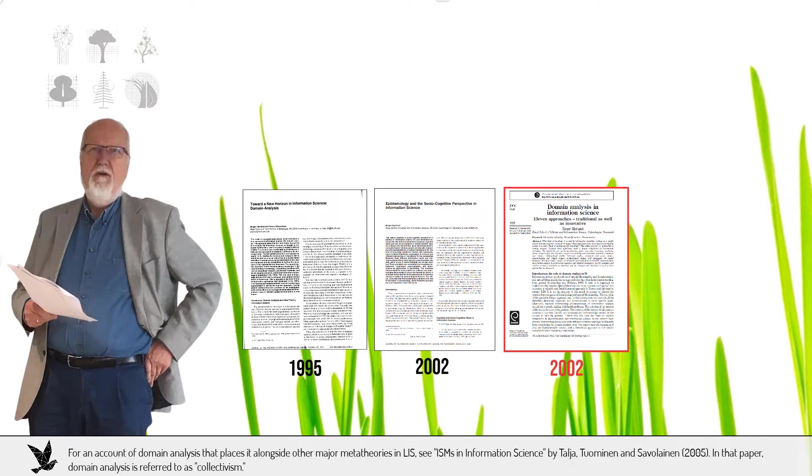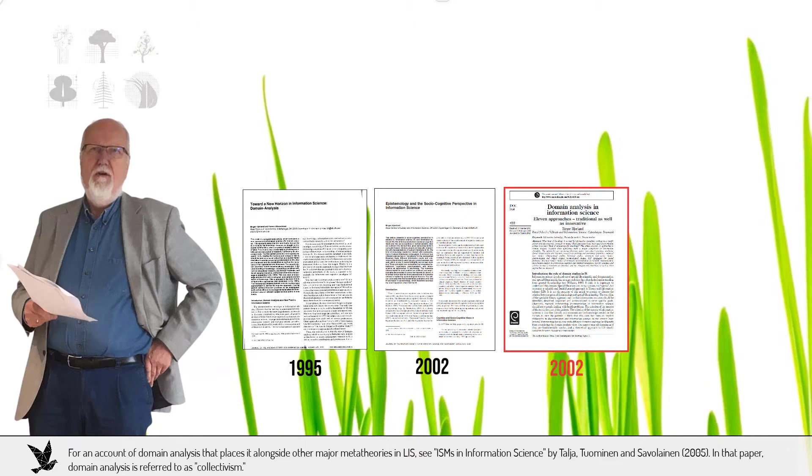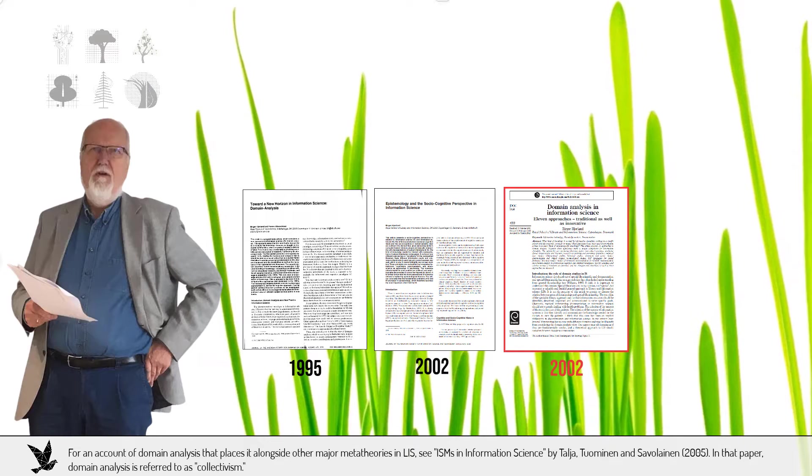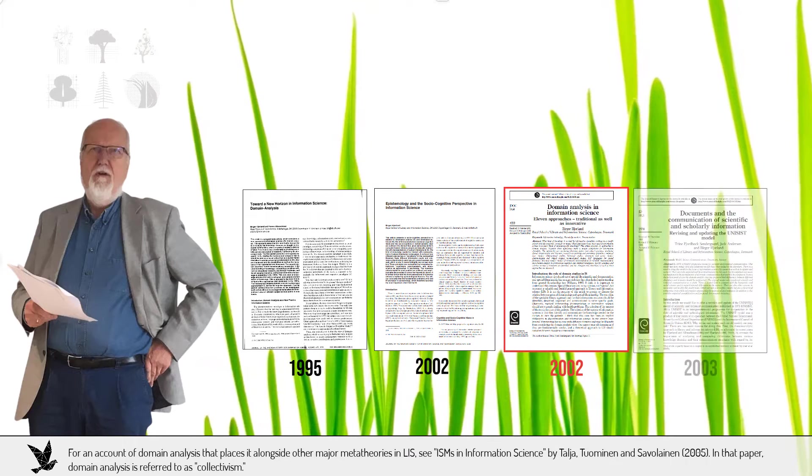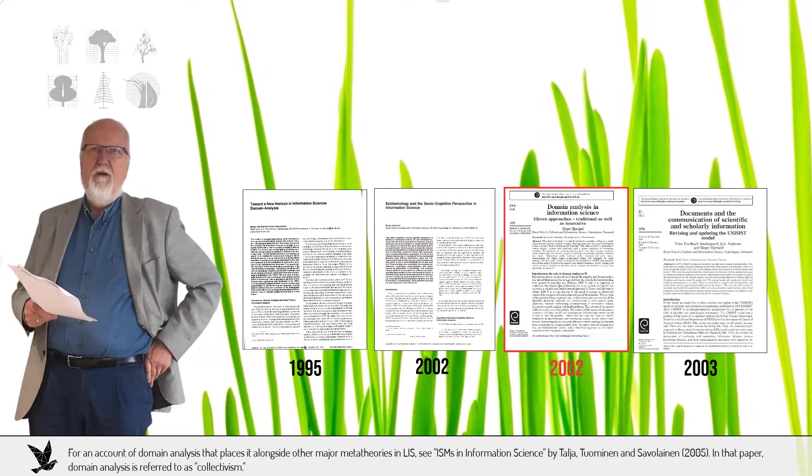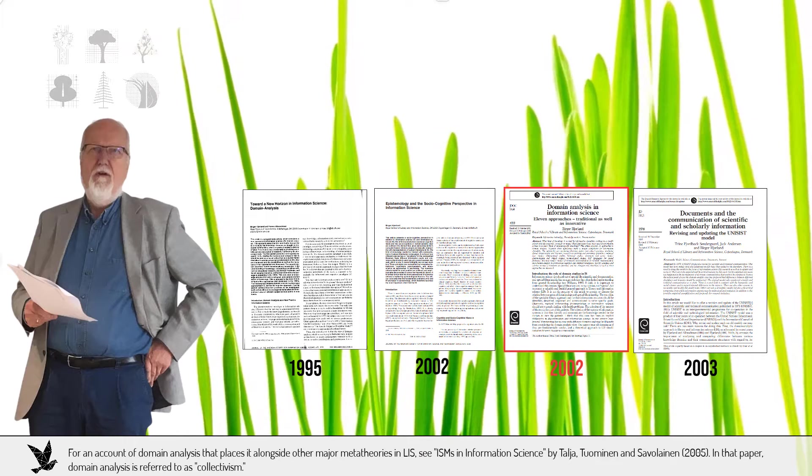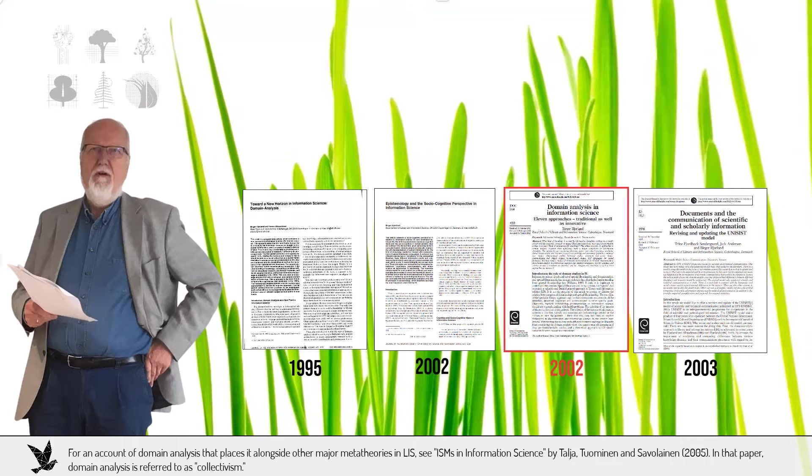Today's featured paper also appeared in 2002. It comes closest to being a description of domain analysis as a research method or professional practice. In 2003 is an empirical example of domain analysis. It describes a model of scientific communication demonstrating the domain analytic claim that all subject areas have distinct information structures.